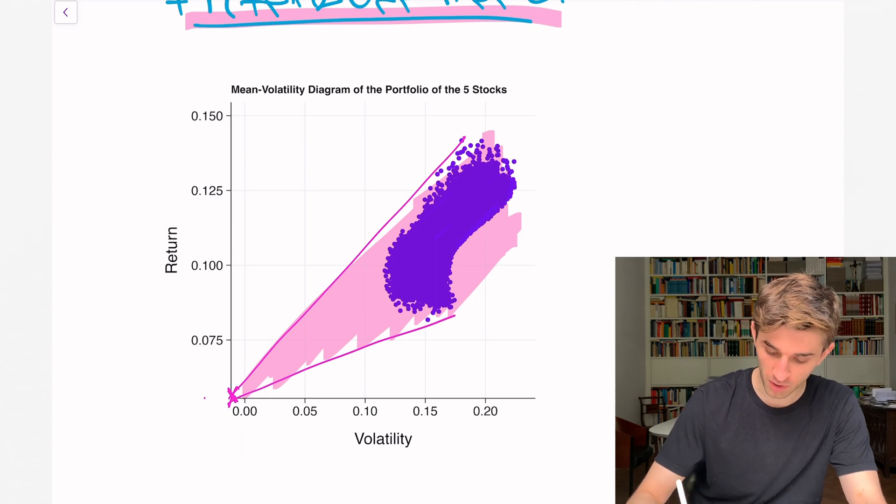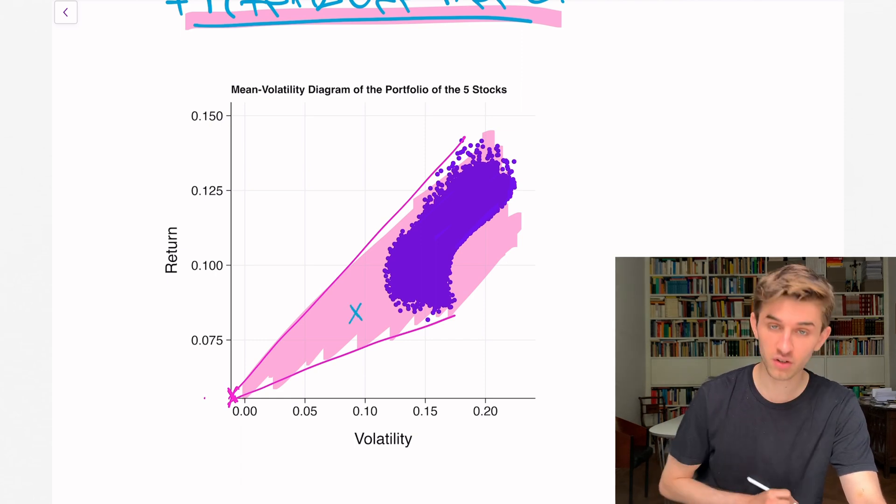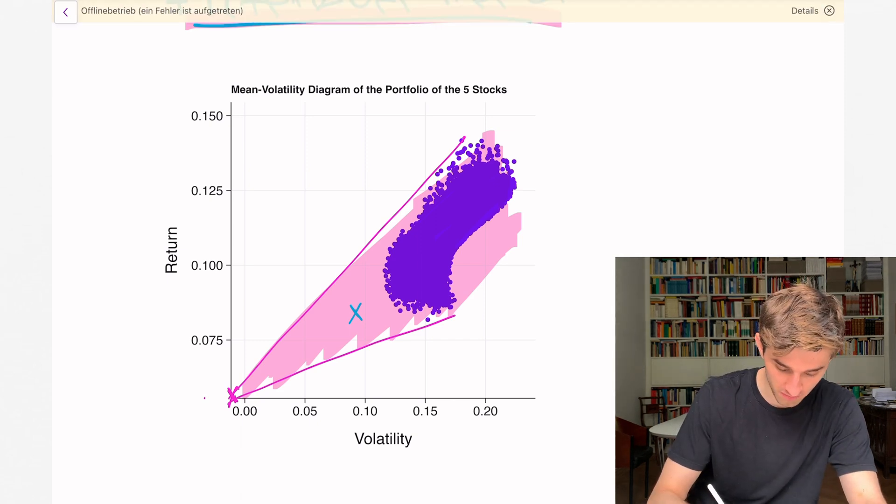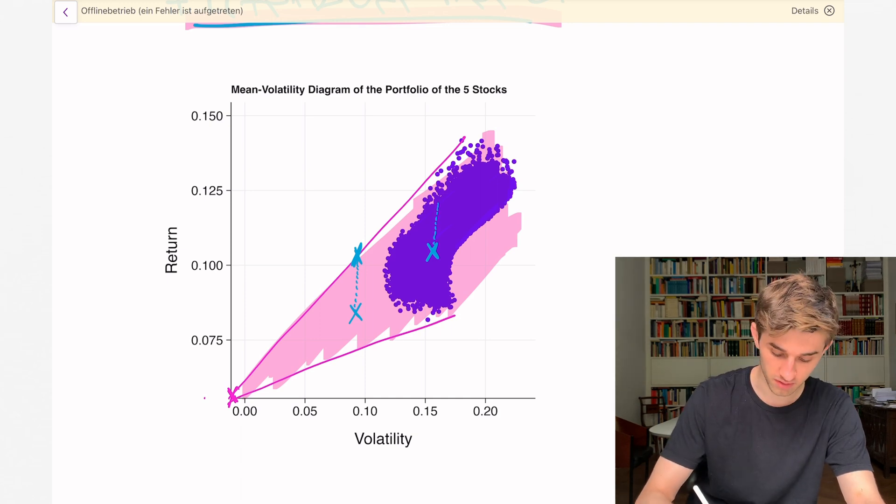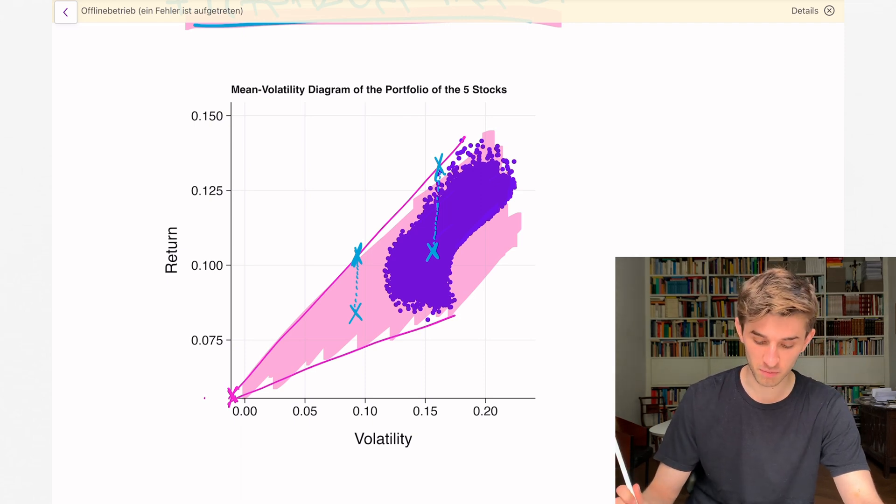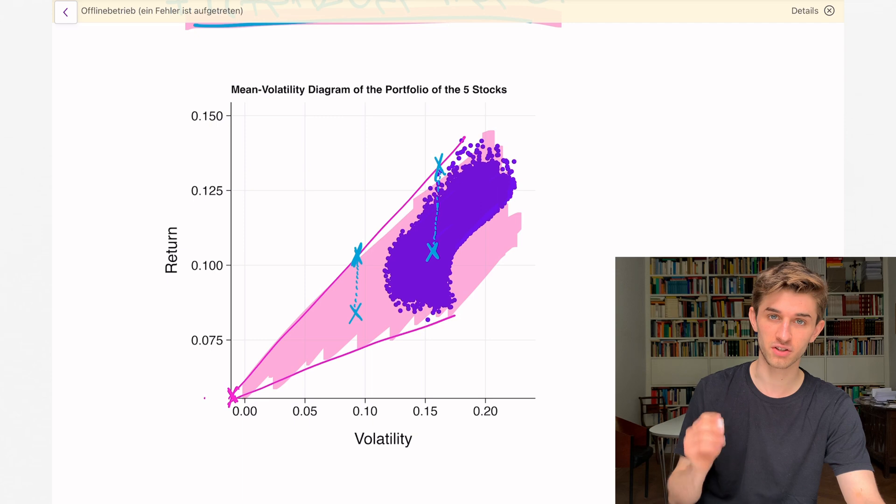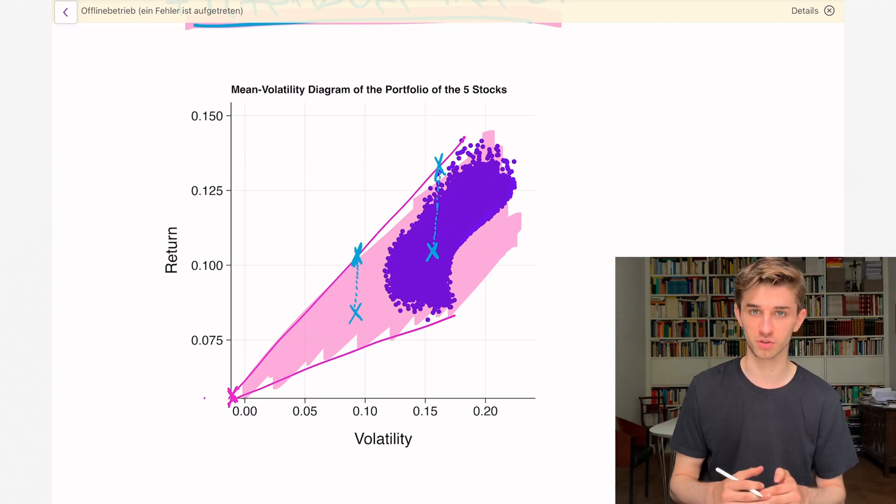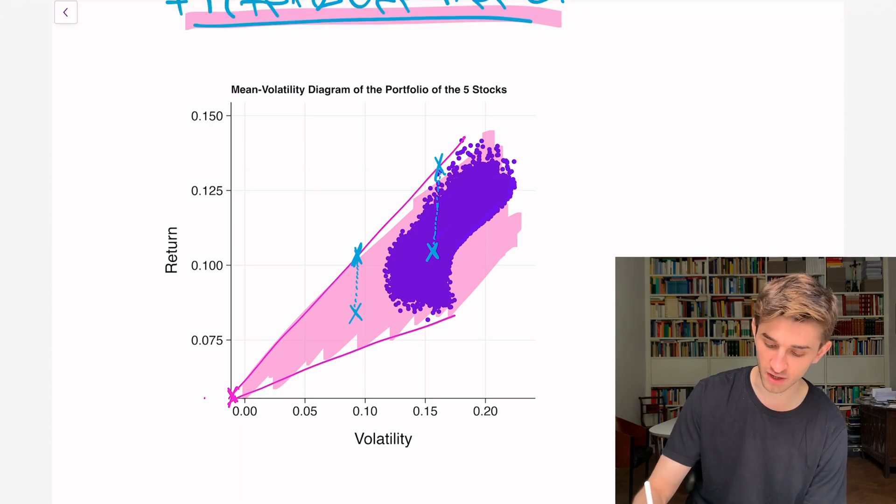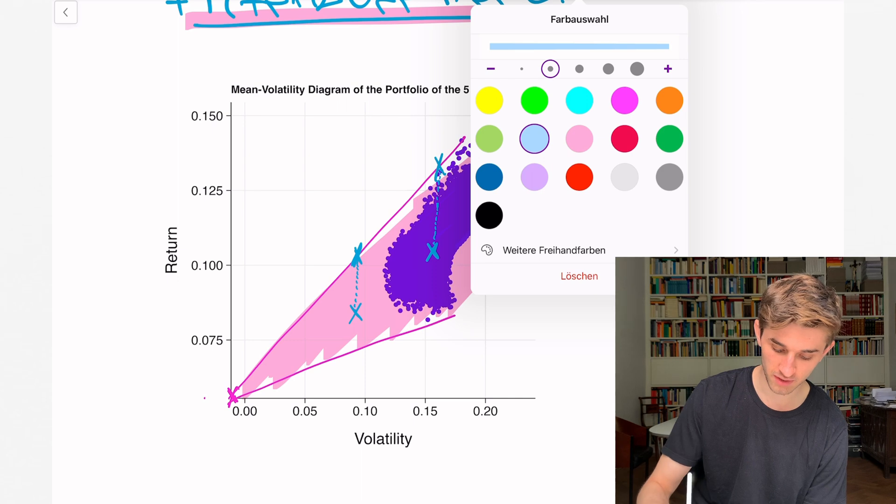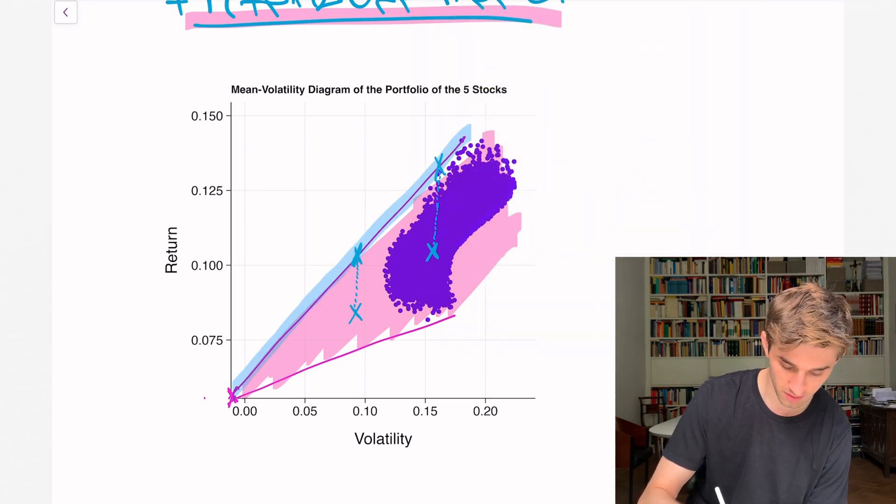Let's say I want to choose a position here. Is that a good idea? No, because I can achieve a position with the same volatility but more return. And the same holds true for this position. There's once again an efficient frontier, portfolios which dominate other portfolios and portfolios which are obviously stupid. The efficient frontier is given by these portfolios, by this line.